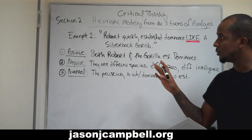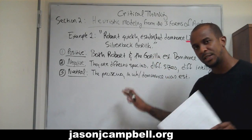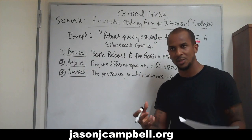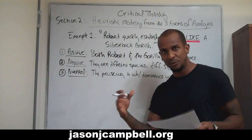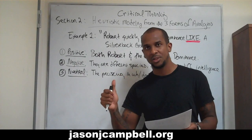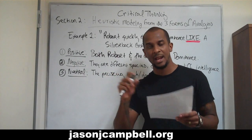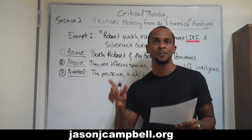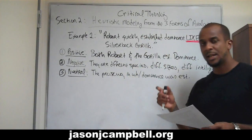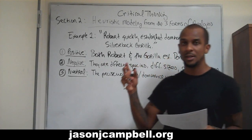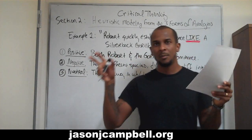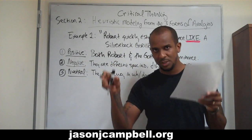Before I move on to example two, let me slow down a little bit and go over this again. Three forms of analogies: first, positive analogy — A and B share properties; second, negative analogy — A and B do not share properties; third form, neutral — A and B may or may not share properties, we need to check and see. In the example of Robert quickly establishing dominance like a silverback gorilla, the positive relationship is that both Robert and the gorilla established dominance.